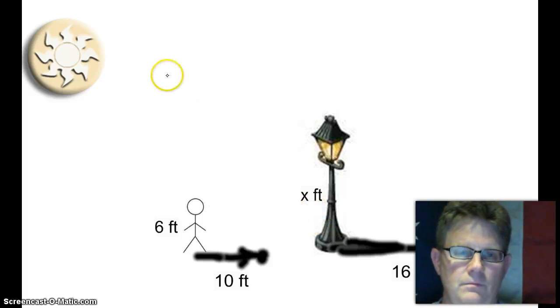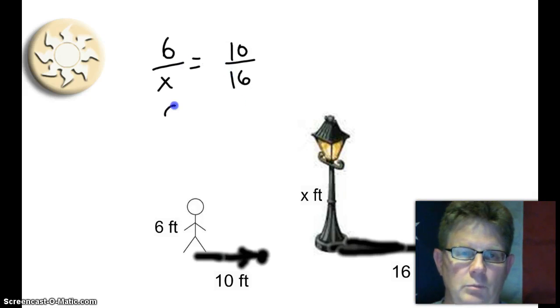So we'll again go six over x. Height over height equals shadow over shadow. Cross multiply. Ninety-six equals ten x. Divide both sides by ten. That lamppost is approximately nine point six feet high.